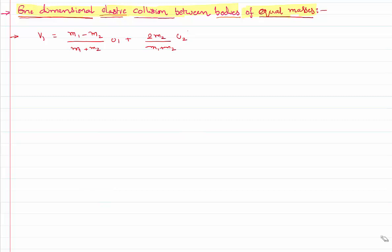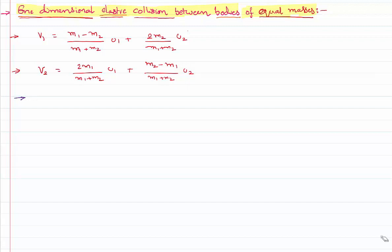If you don't know this derivation, please look back at the previous video lessons of this same chapter — Work, Power and Energy — where you can find the derivation. Just to avoid being repetitive, I'm not deriving that equation once again. I have also proved that the final velocity of the second body after the collision, v2, is: 2m1 / (m1 plus m2) times u1, plus (m2 minus m1) / (m1 plus m2) times u2. If you are not aware of these derivations, please go through the video lessons available in the same playlist.